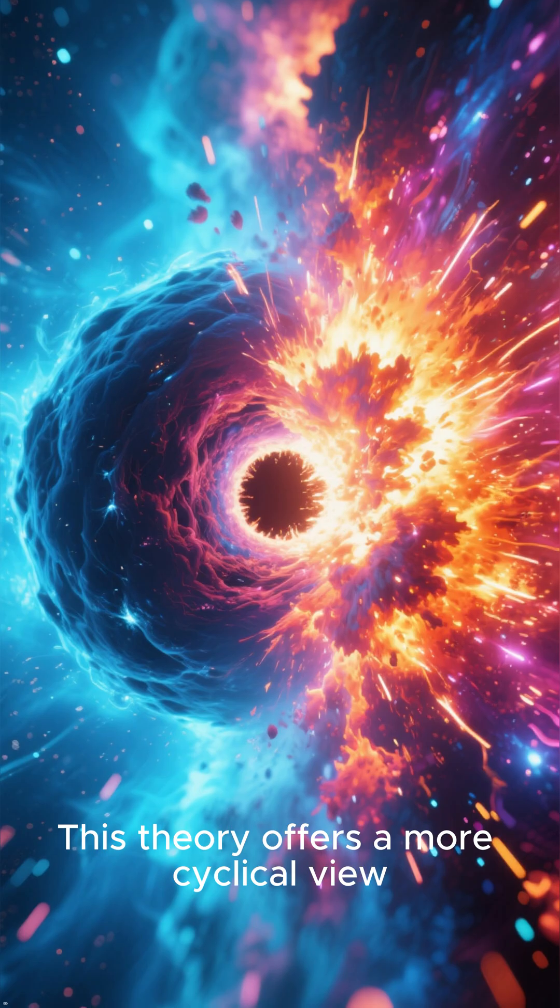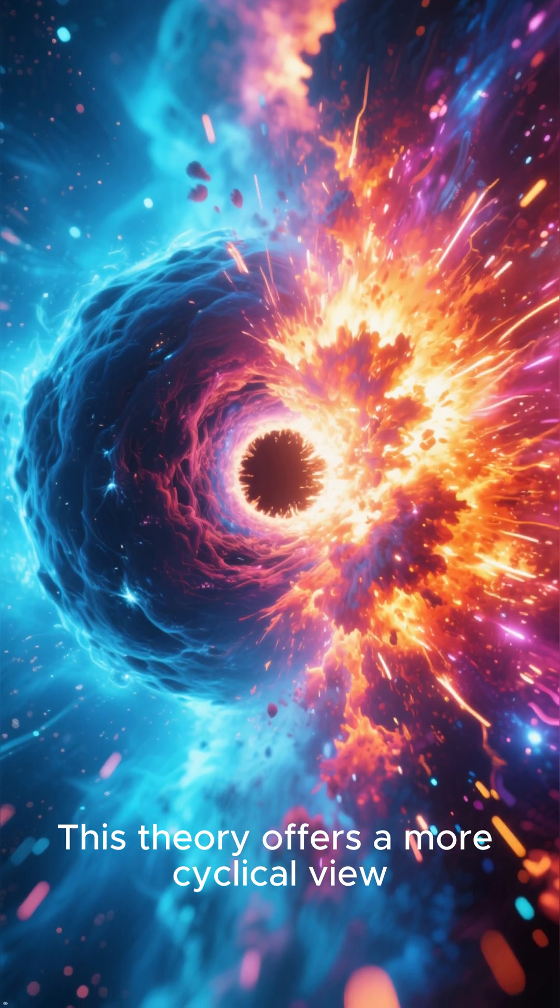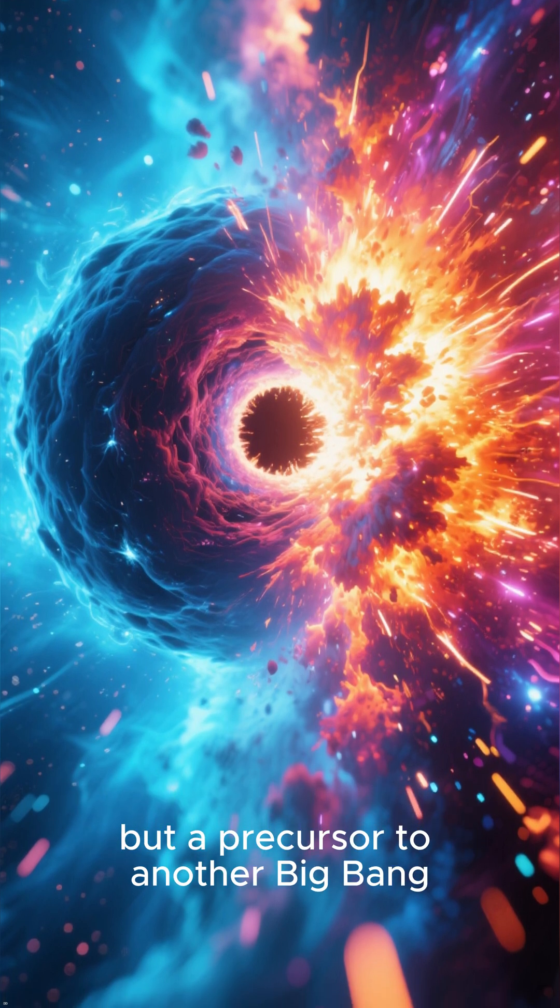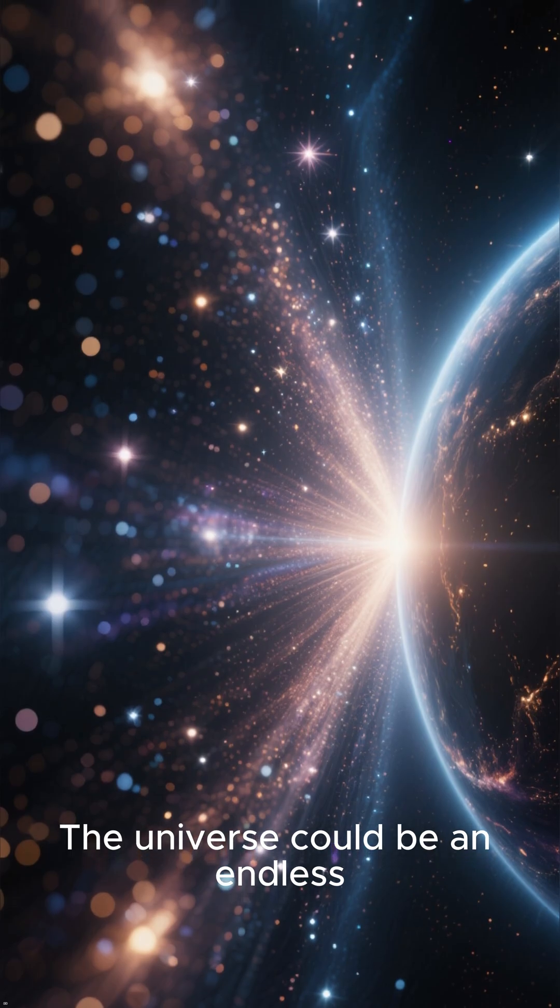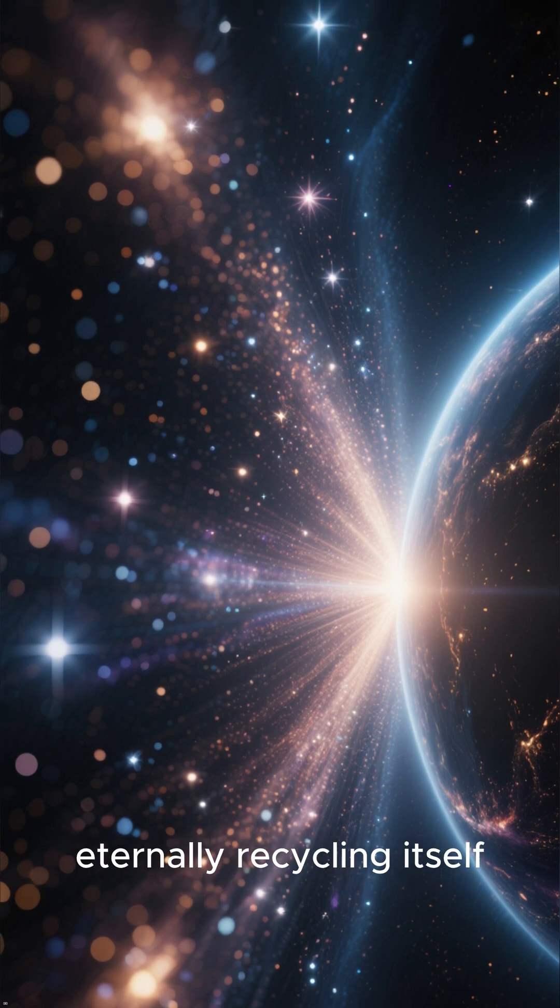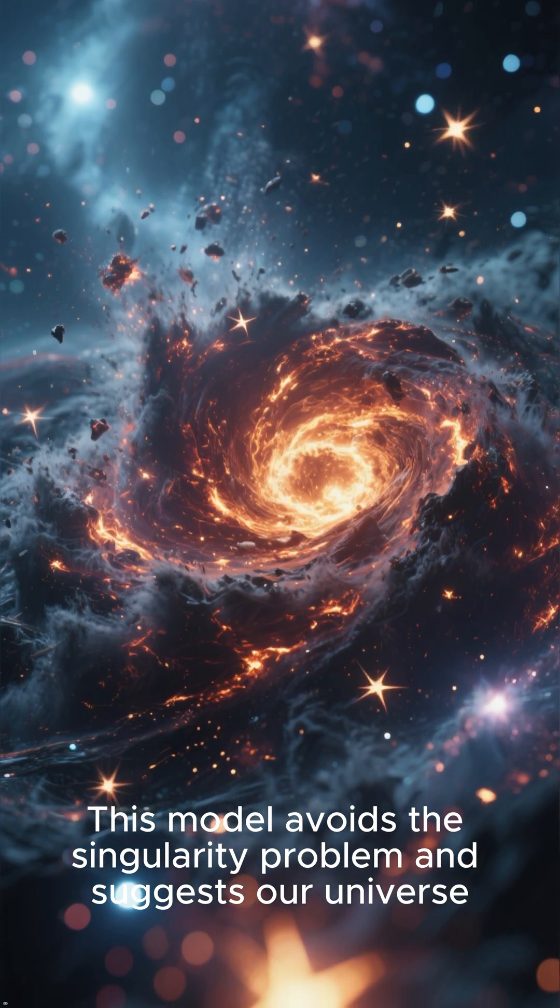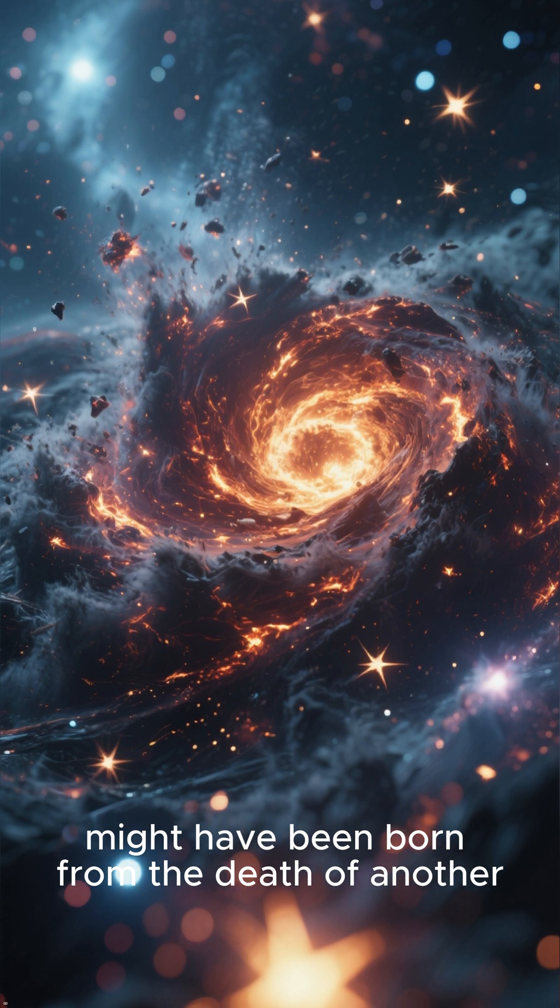Number 2: The Big Bounce. This theory offers a more cyclical view. The Big Bounce suggests that a big crunch is not the end, but a precursor to another Big Bang. The universe could be an endless series of expansions and contractions, eternally recycling itself. This model avoids the singularity problem and suggests our universe might have been born from the death of another.